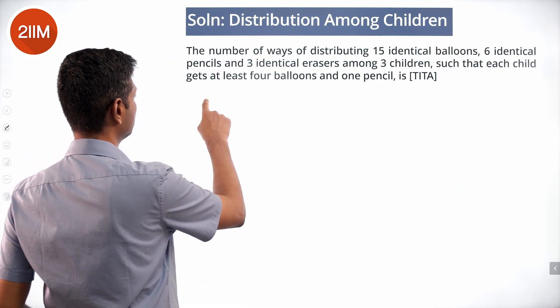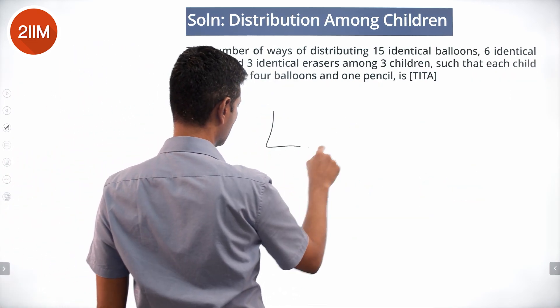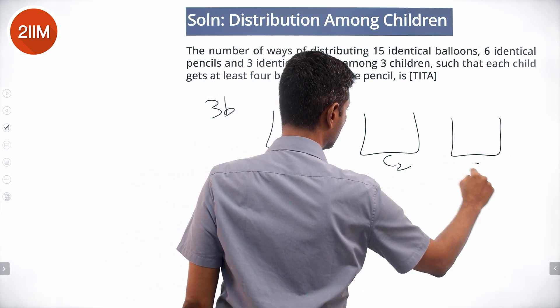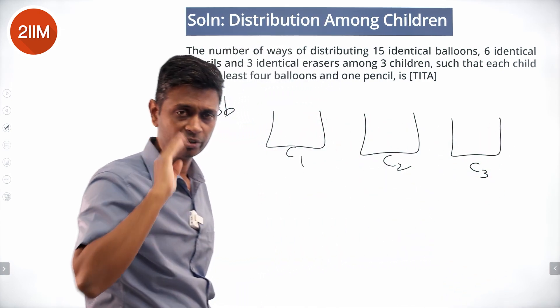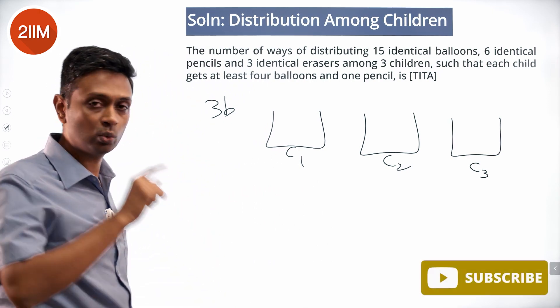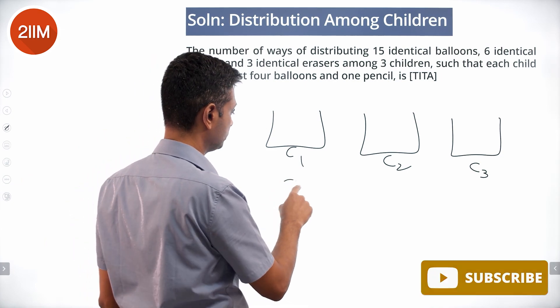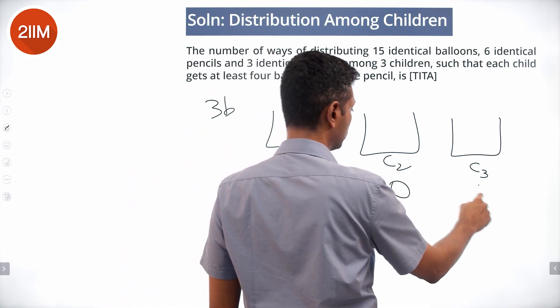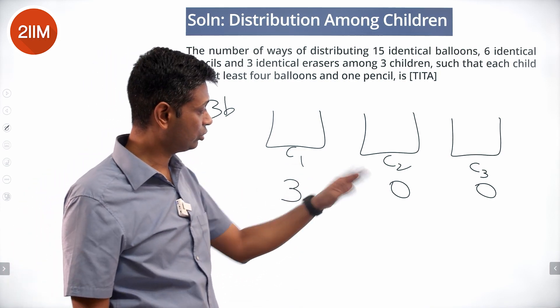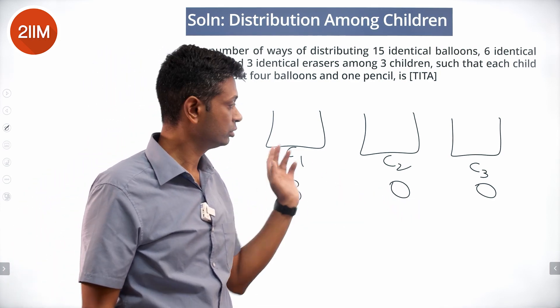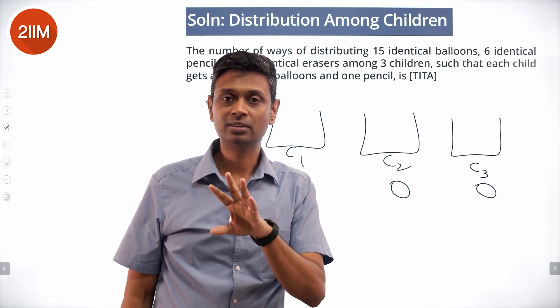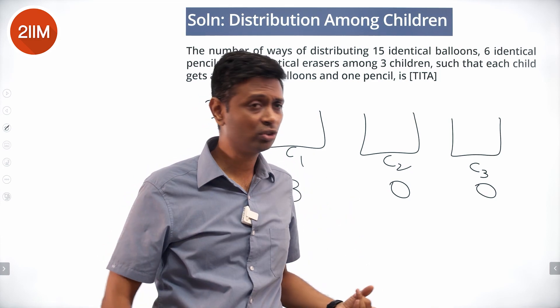I think about only 3 balloons. Child 1, child 2, child 3. Now I say, hey, I could have a scenario where all 3 go to 1 child. This is 3, 0, 0. This 3, 0, 0 could be 3, 0, 0, or 0, 3, 0, or 0, 0, 3. Two of the children get nothing. That means 1 gets all 3. 3, 0, 0 is one possibility.